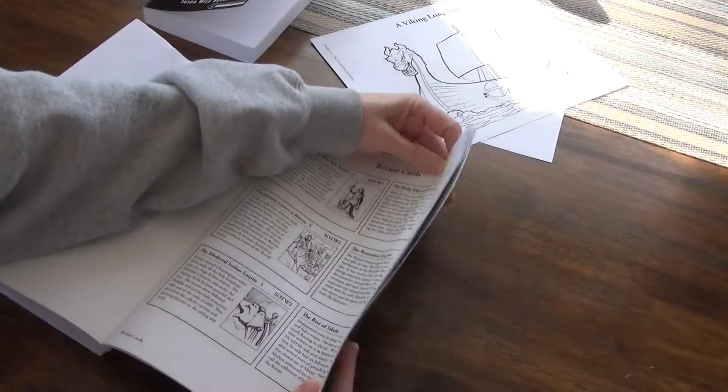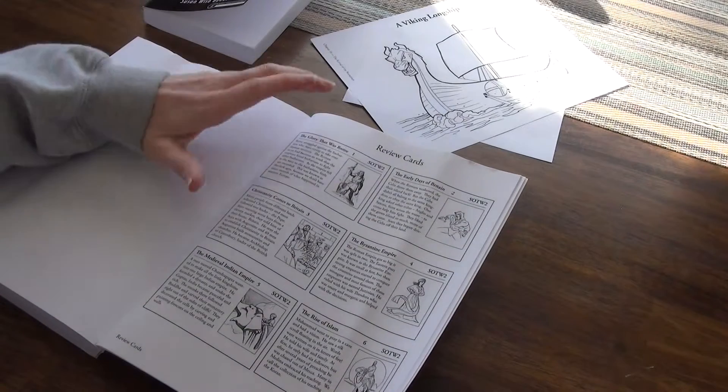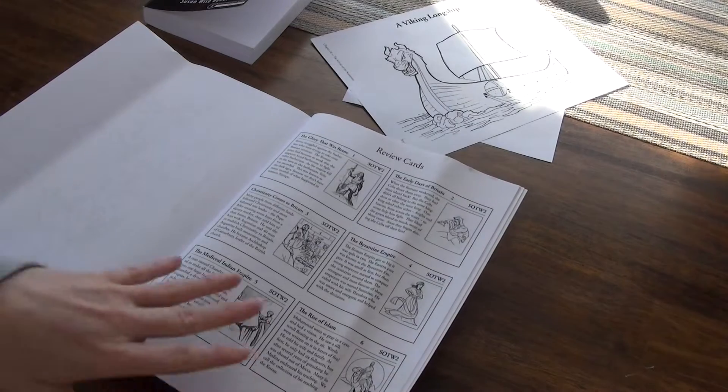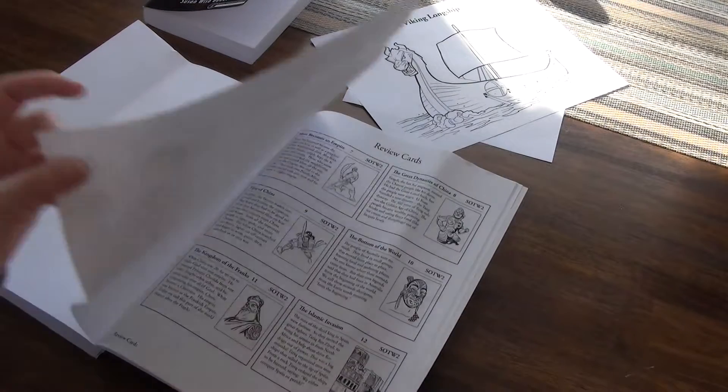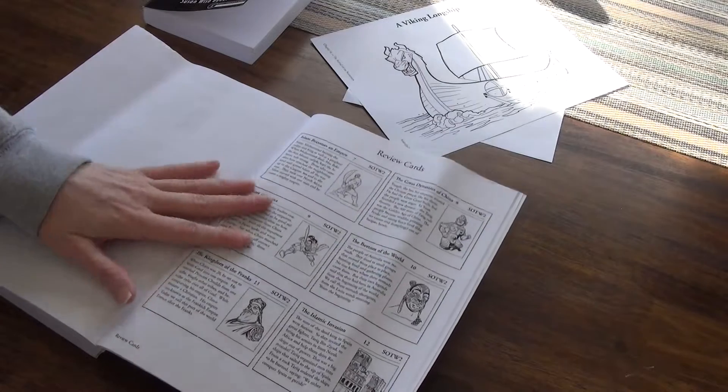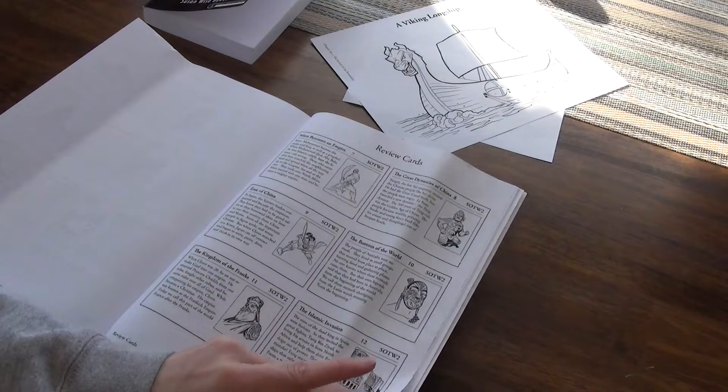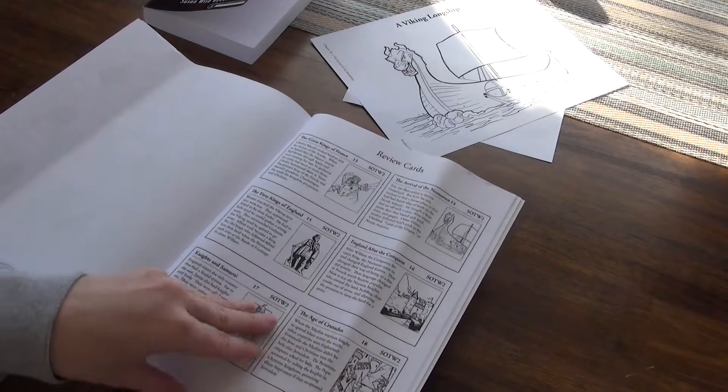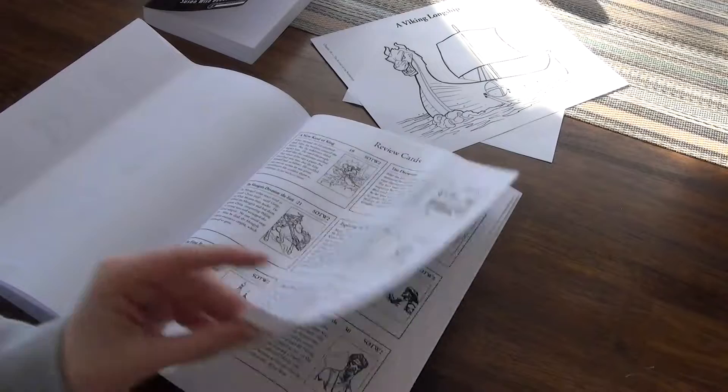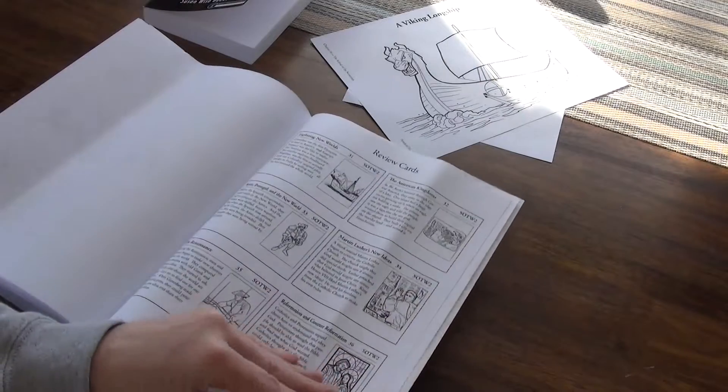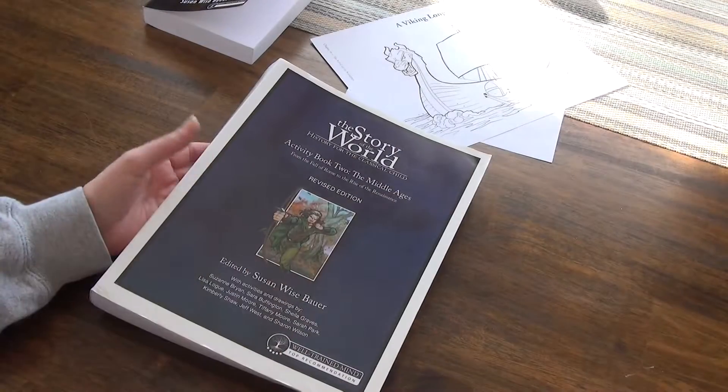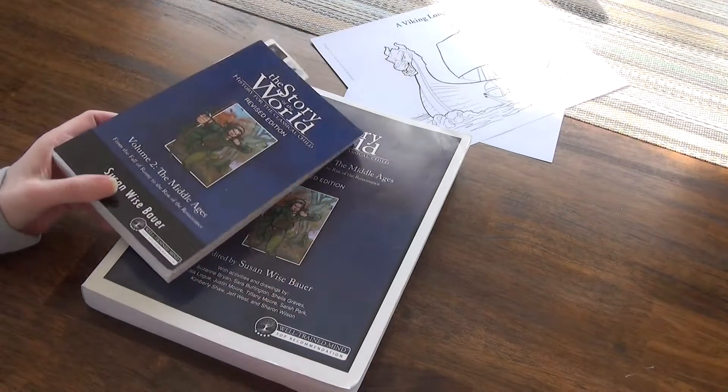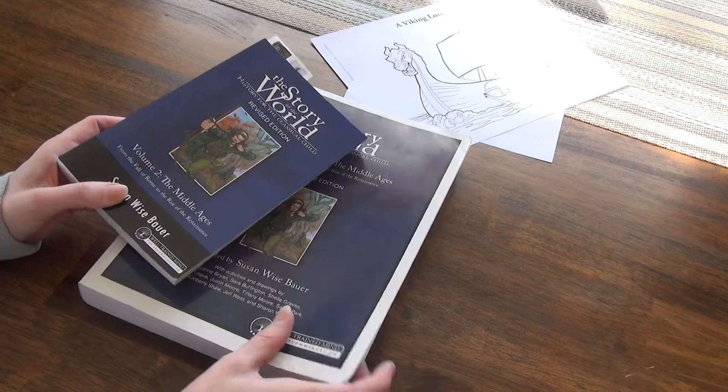In the very back, there are review cards. And this is suggested to cut these out and review the different chapters as you go through everything. Go back and it kind of summarizes your whole chapter for you. That way they can practice about what happened during the great dynasties of China or what happened during the age of crusades. And so you can save these and review them throughout the year or even continue to review them throughout your whole history lessons. Whether it be Story of the World 2, 3, 4, 1, whatever it is, they have them all.